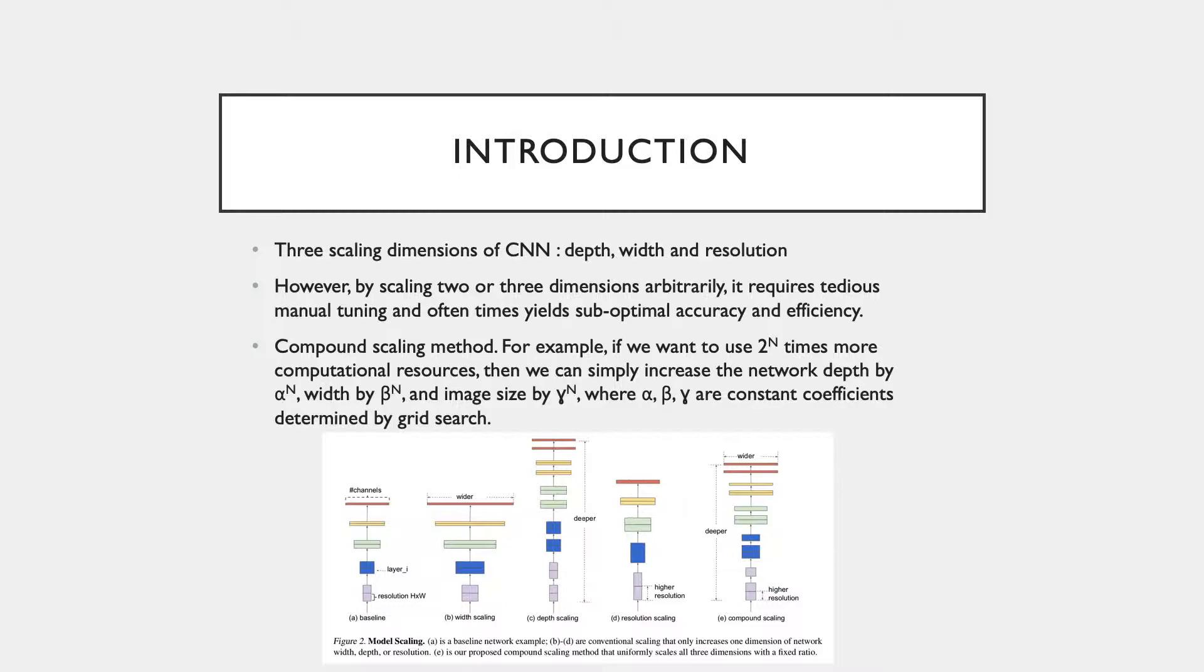So there are three dimensions of a CNN that can be scaled, which are known as the depth, the width, and the resolution. The depth simply means how deep the network is, which is also equivalent to the number of layers in the model. Width denotes how wide the network is, and lastly, the resolution is the image resolution that is being passed to the CNN.